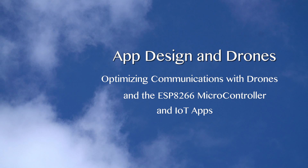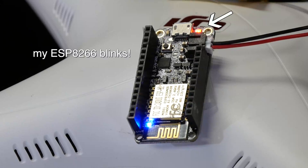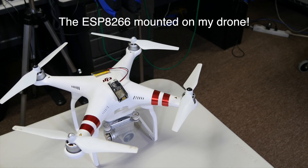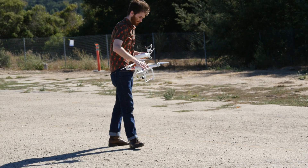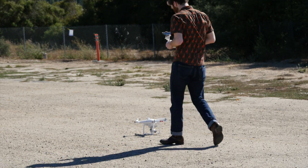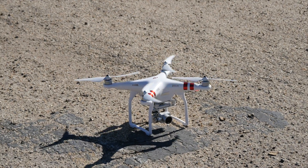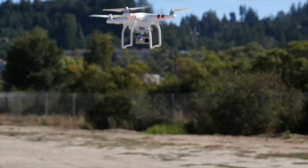We just built a brand new app that controls the LED lights on an ESP8266 and then mounted it on our drone. Now we want to see how well it works in real life. So to an abandoned airport we brought our IoT device attached to the drone, a laptop, and a Wi-Fi access point. We control the IoT device and the drone from the laptop, communicating with it over a Wi-Fi access point.